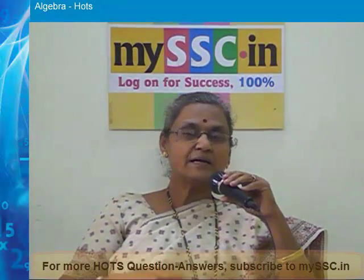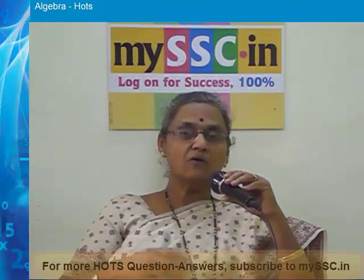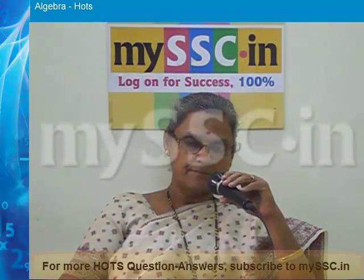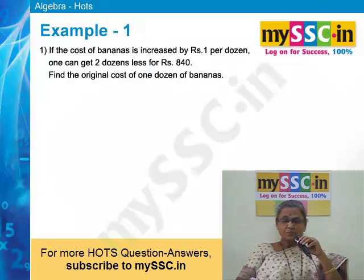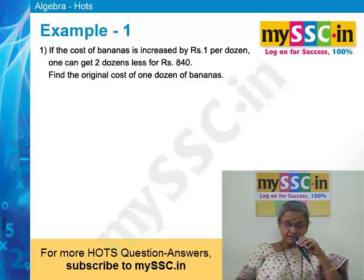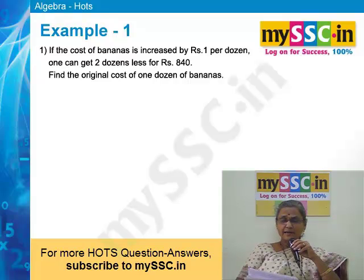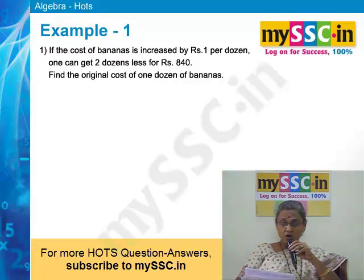This problem you can solve by using one variable, two variables, or different methods. Therefore we can't say this problem depends on one particular chapter — it is a problem from algebra only. I will read this problem: If the cost of bananas is increased by rupee 1 per dozen, one can get 2 dozens less for rupees 840. Find the original cost of 1 dozen of bananas.